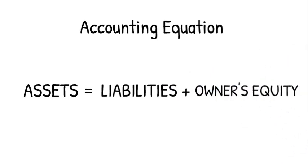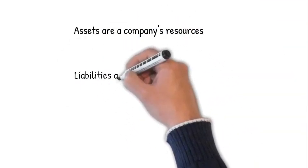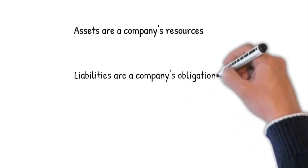Before I explain and illustrate debits and credits in accounting and bookkeeping, we need to review the balance sheet equation. From a large multinational corporation to the corner variety store, every business transaction will affect a company's financial position. The financial position of a company is measured by the following items: assets, what the company owns; liabilities, what the company owes to others; and owner's equity, the difference between assets and liabilities. The accounting equation of assets equals liabilities plus owner's equity is a simple way to understand how these three amounts relate to each other.